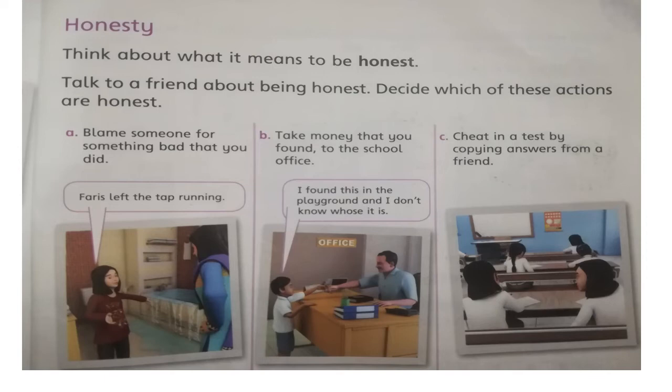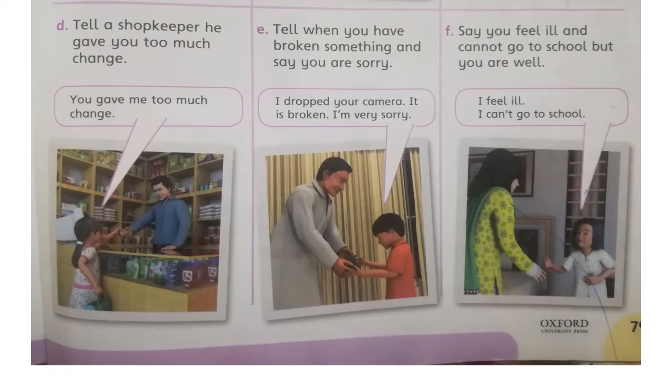A few more examples on the same page: tell a shopkeeper he gave you too much change. This girl is telling him, 'You gave me too much change.' What do you think — is it honesty or dishonesty? Another one: tell when you have broken something and say you are sorry. Feeling embarrassment or feeling ashamed about your act is also an honest act. That boy is saying, 'I dropped your camera, it is broken, I am very sorry.'